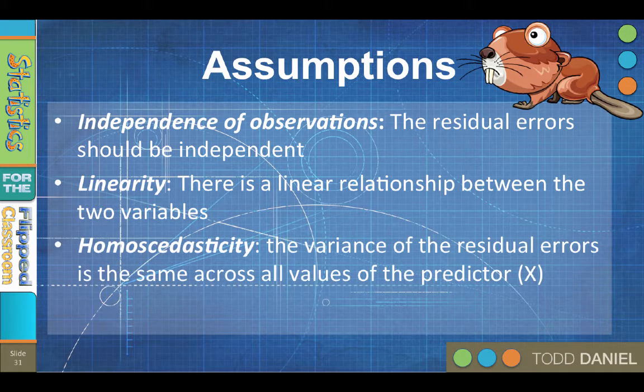Homoscedasticity. The variance of the residual errors should be the same across all values of your predictor, or X. To check, scatter plot the standardized residual errors against predicted errors in SPSS. They should be more elliptical, not cone-shaped or curved. If the scatter plot shows heteroscedasticity, transform the data.